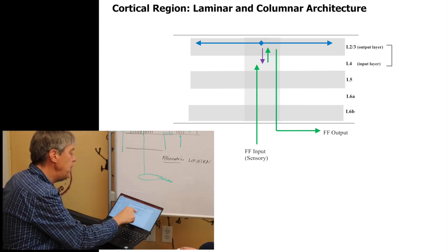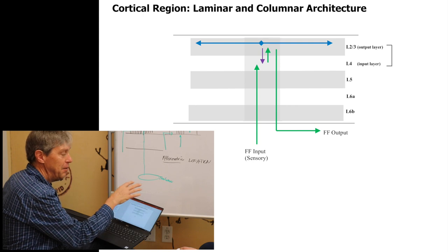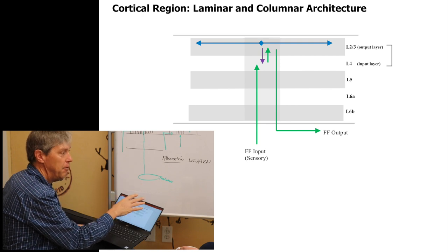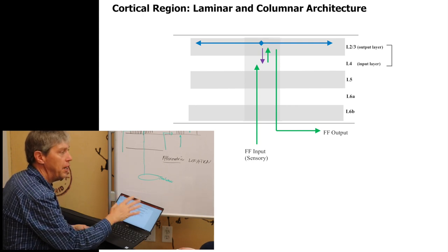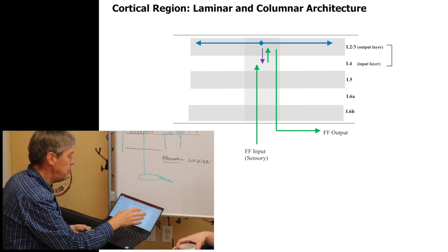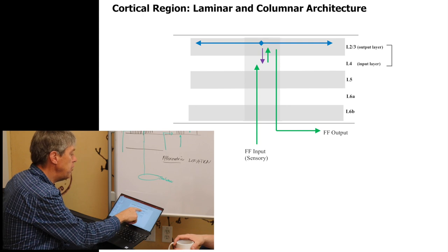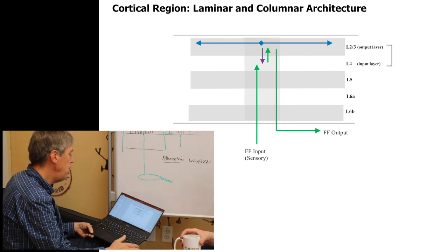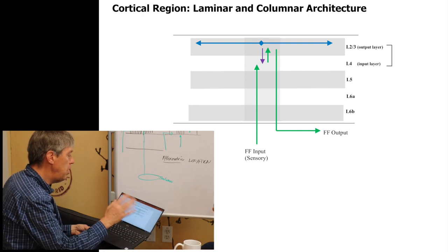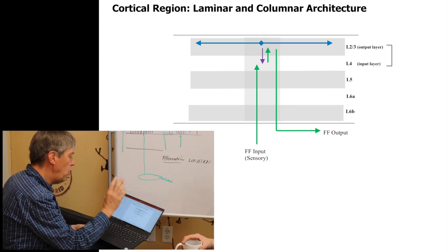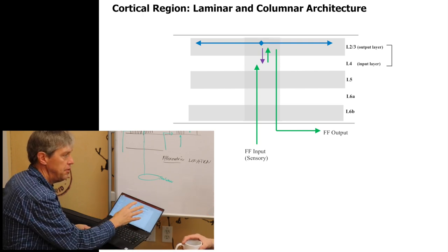I'm not showing the temporal memory layer here. As I said earlier, I'm just going to talk about the new model — we're not showing the temporal memory. So we're showing layer four and layer two, three, and we're kind of ignoring the lower layer three B. That's the basic model: an input layer and an output layer. This is well-established neuroscience.